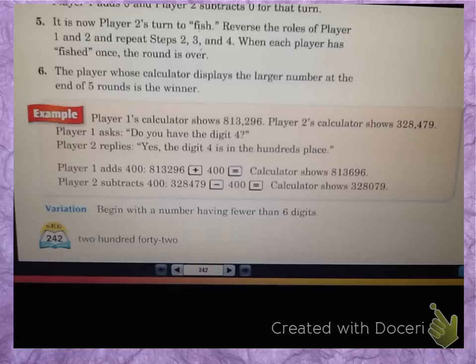So let's look at an example here at the bottom. Player one's calculator shows 813,296. Player two's calculator shows 328,479. Player one asks, do you have the digit 4? Player two replies, yes, the digit 4 is in the hundreds place.